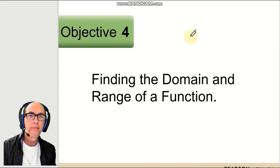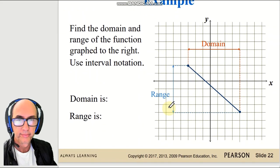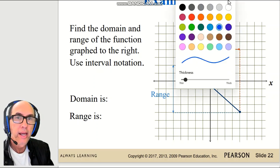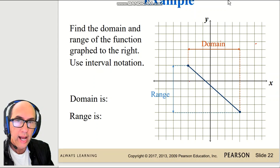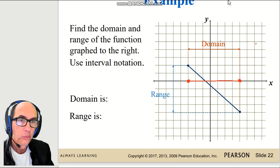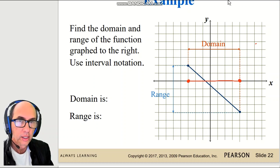Let's understand how to find the domain and range of a function from a graph. The domain is all the x-coordinates that have at least one point belonging to the graph. Looking at the x-axis, the domain is represented in red on the graph.